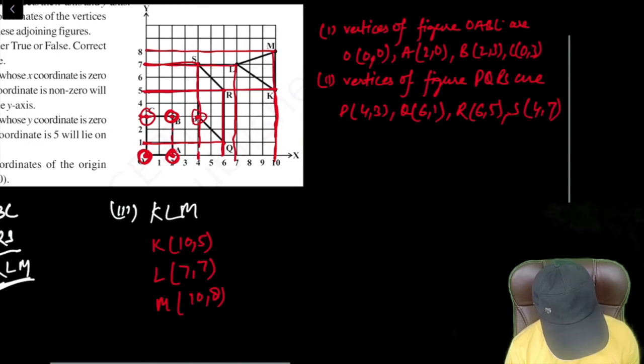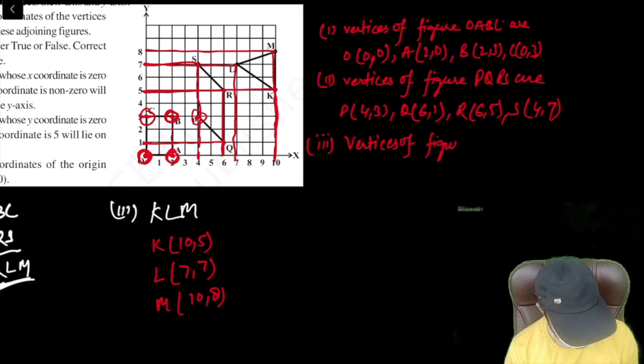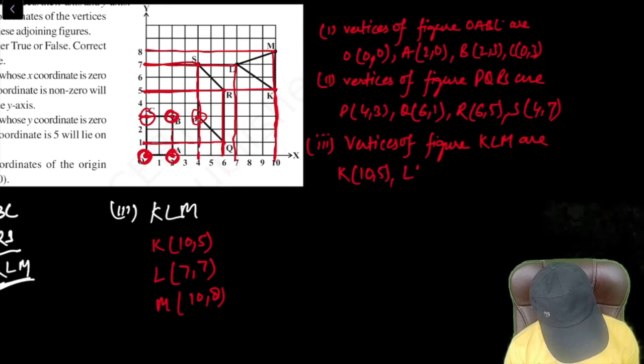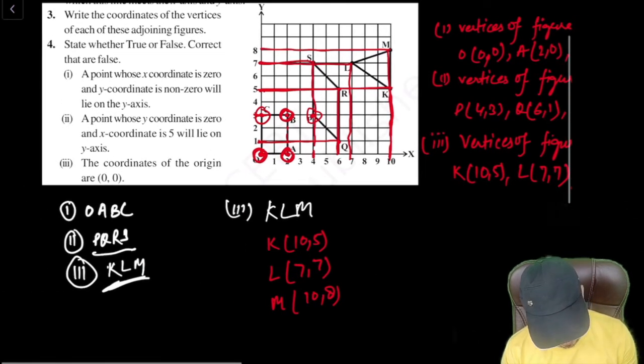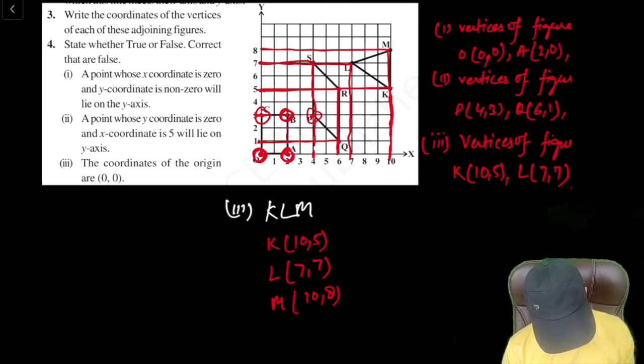Now if I write the answer: vertices of figure KLM are K (10,5), L (7,7), M (10,8). So that's how third question is solved. Now let's talk about the fourth question.